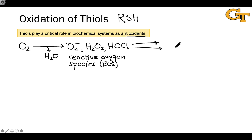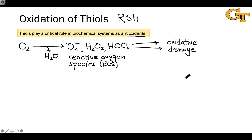The problem with ROS is that they can in turn oxidize important biochemical compounds like lipids, fatty acids, and even the nitrogenous bases of DNA, and this results in oxidative damage. If one of the nitrogenous bases is oxidized, this is going to prevent DNA from forming the familiar double helix and forming hydrogen bonds. So biochemical systems need a way to protect against the damaging effects of reactive oxygen species, and thiols are one of the most important and abundant ways to do this.